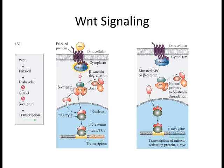It's only when disheveled gets released from the frizzled receptor that it comes in and says stop—stop destroying beta-catenin. It prevents beta-catenin from being tagged for destruction, and then beta-catenin enters the nucleus and initiates transcription. Under normal conditions, beta-catenin is constantly being degraded. But when Wnt signaling hits the frizzled receptor, it stops beta-catenin degradation and beta-catenin goes into the nucleus, initiating transcription. That's the canonical Wnt signaling pathway—the main one you need to know.